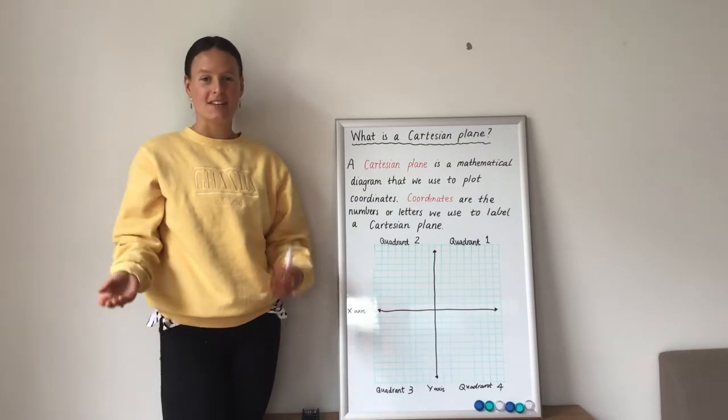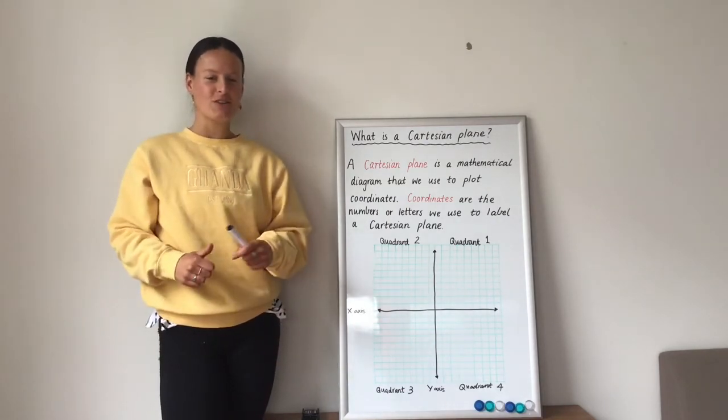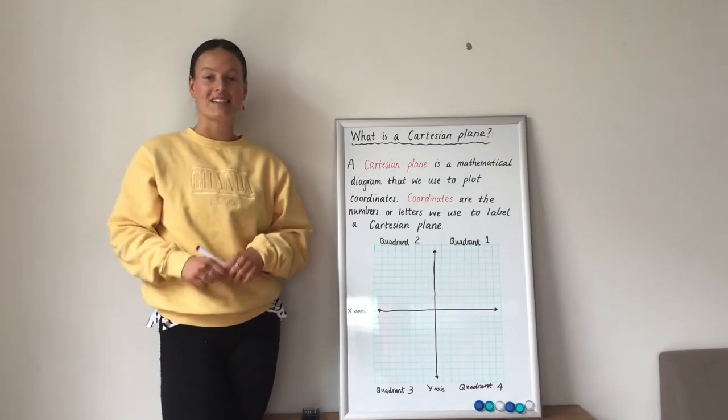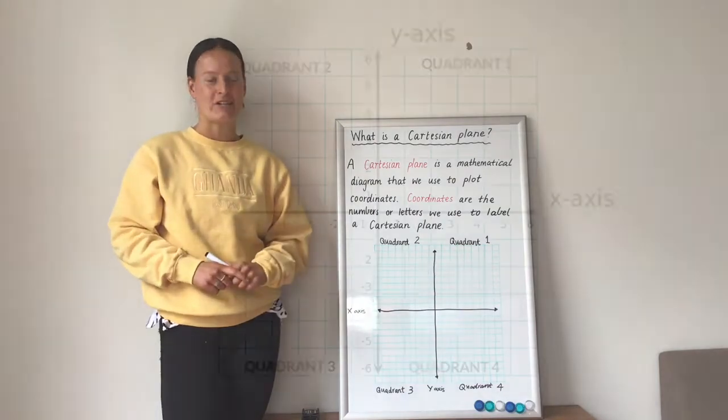So this is where positive and negative numbers come into play. So, have a look at the next diagram at how to label your x and y-axis on your Cartesian plane.